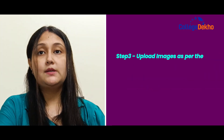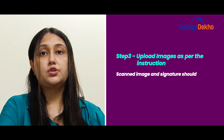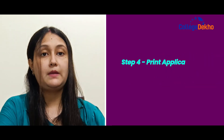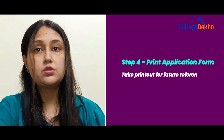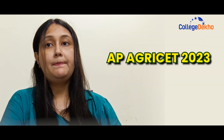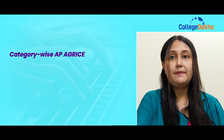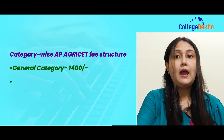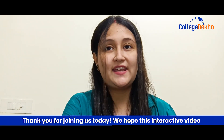Step 3 is uploading images as per the instructions — scanned image and signature should be uploaded as per the mentioned specifications. Step 4 is printout of the application form — you need to take out several printouts for future reference. Regarding the AP AgriSet 2023 application fee, for the general category it is 1400 and for PWD, SC, and ST categories it is 700.